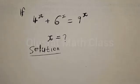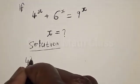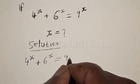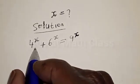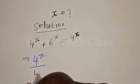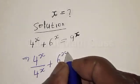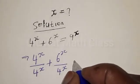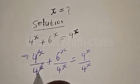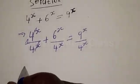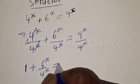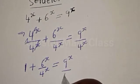We have 4 raised to power x plus 6 raised to power x equal to 9 raised to power x. Let's divide all through by 4 raised to power x. Then we have 4^x divided by 4^x plus 6^x divided by 4^x equal to 9^x divided by 4^x. This first term cancels to give 1, so we have 1 plus 6^x divided by 4^x equal to 9^x divided by 4^x.